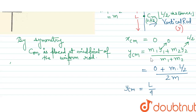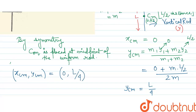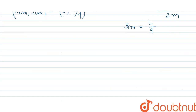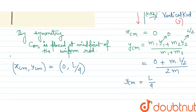So the position coordinate of the center of mass of the system is (0, L/4). Since this is a descriptive question, the distance of the center of mass from the origin O is L/4.